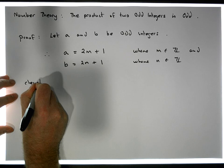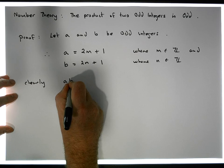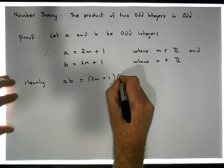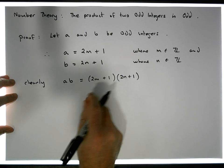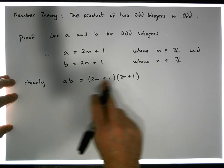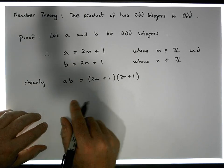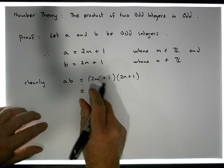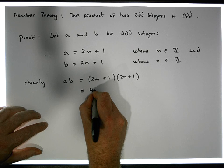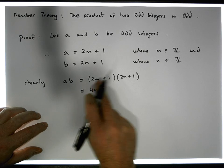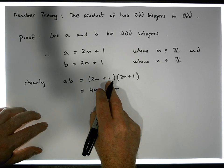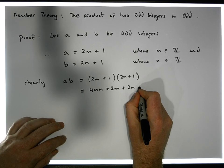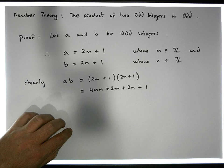Clearly, a times b equals (2n + 1) times (2m + 1). When we expand out the brackets, we get 2 times 2 is 4, m times n is mn, giving us 4mn; 2m times 1 gives us plus 2m; 1 times 2n gives us plus 2n; and 1 times 1 gives us plus 1.